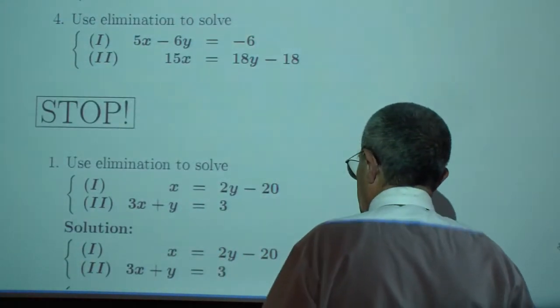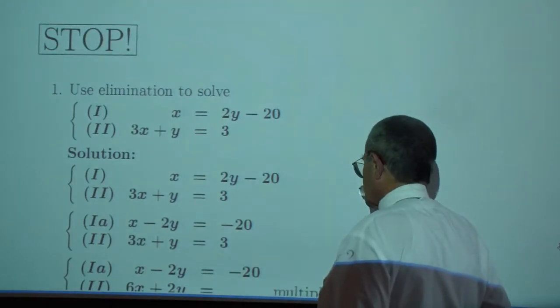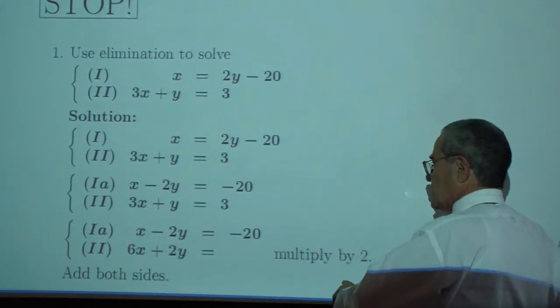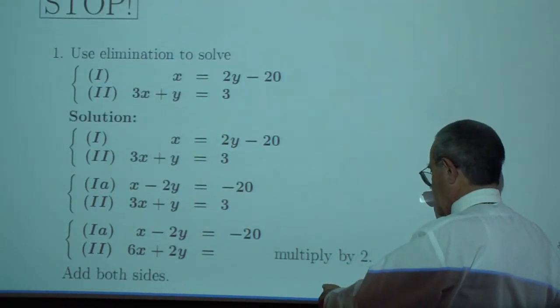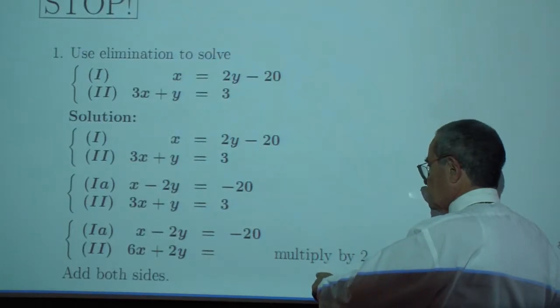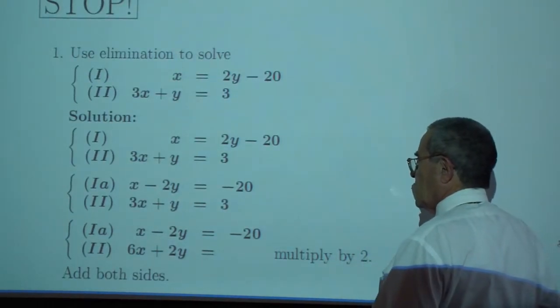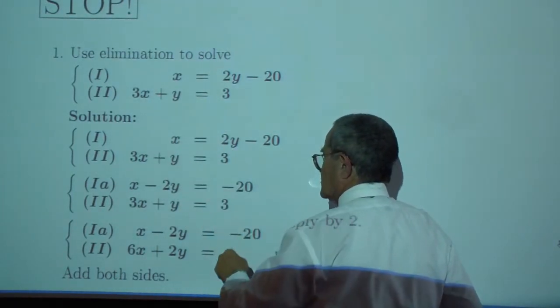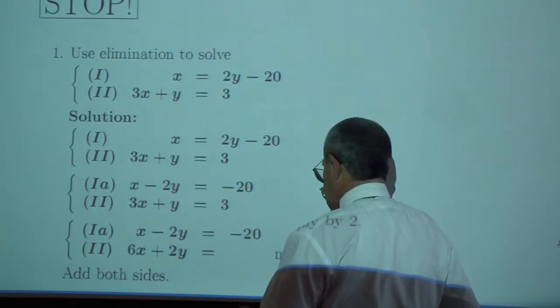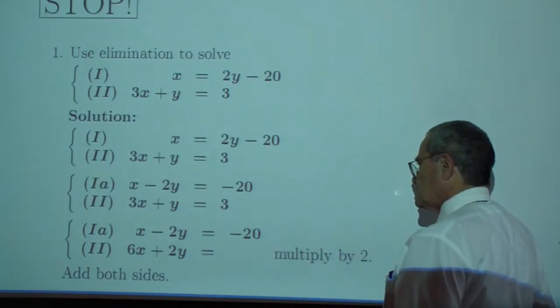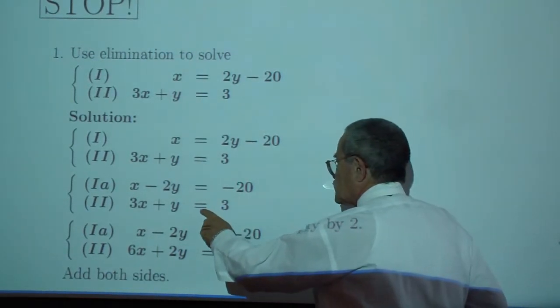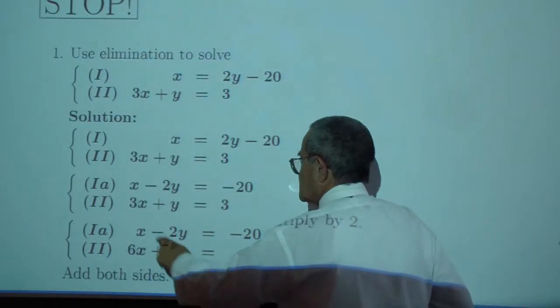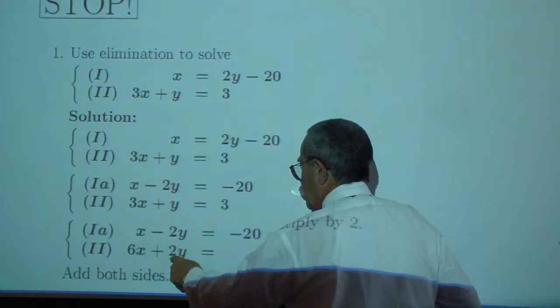Solutions to the exercises. First I want to multiply by 2. And why do I want to do that? So first I subtract 2y from both sides, and then I want to multiply this equation by 2 in order to get 6x and 2y.